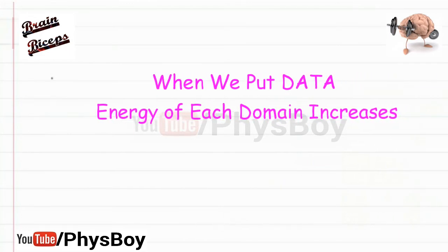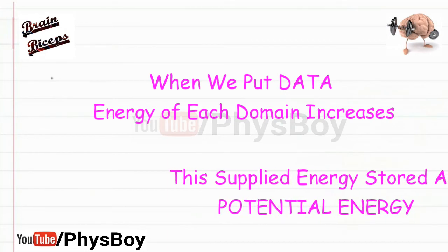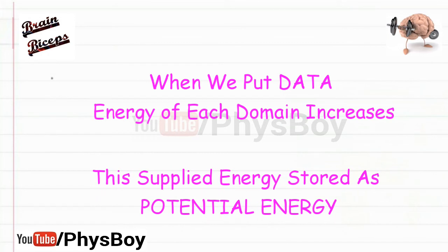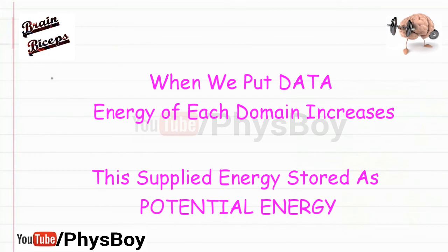When we put some extra data into a hard disk, the energy of each domain increases. We have to supply energy to each domain to orient or align the magnetic domain in a particular direction. This supplied energy will be stored in the magnetic domain as potential energy. Most importantly, higher information content correlates with a more energetic configuration, and this is true regardless of the particular type of storage.